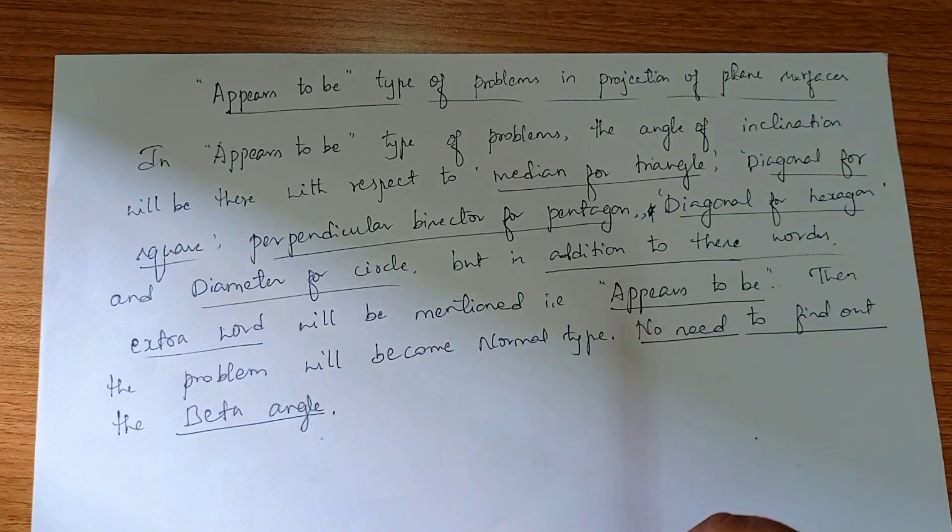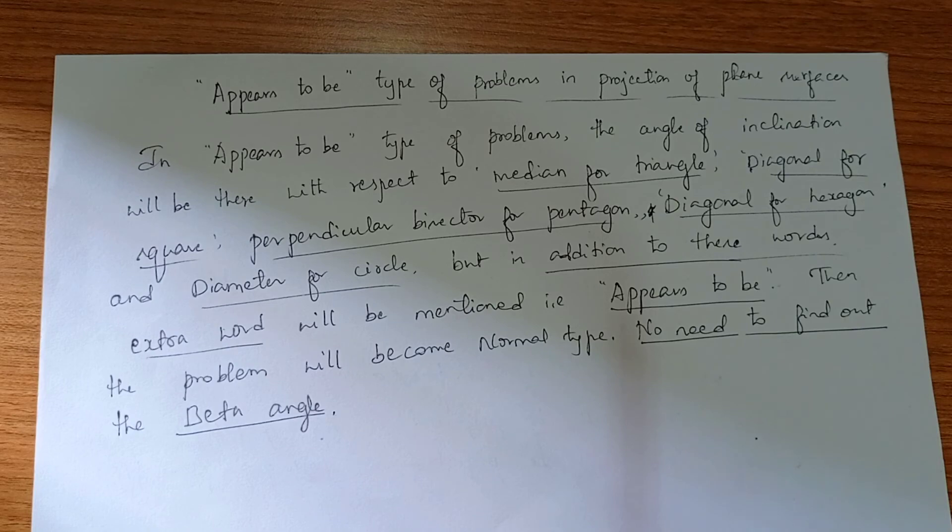If 'appears to be' is given in the question, it means the problem will become normal type, and we should not find out the bit angle. Remember, in the question, in addition to these words like median, diagonal, perpendicular, bisector, and diameter, they will be mentioning the phrase 'appears to be.'